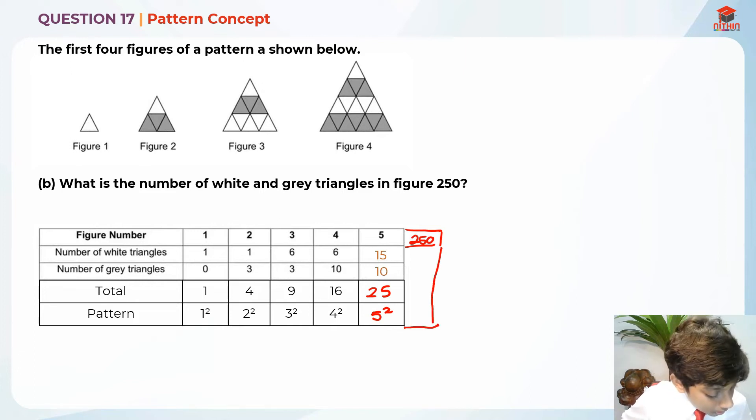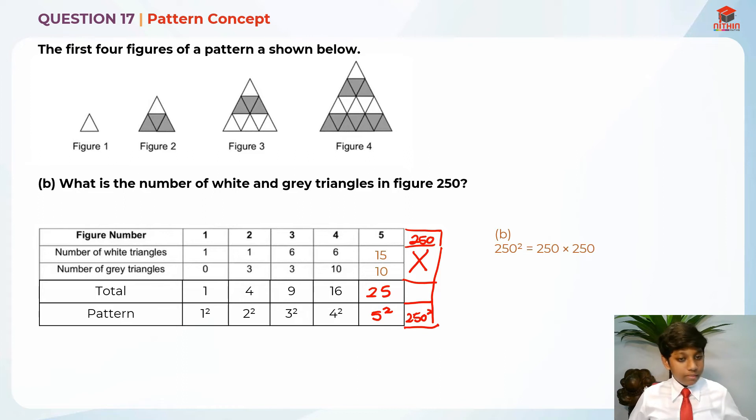It should be 250 squared, right? So it will give us 250 times 250, which will be 62,500. Sorry, I said it wrongly. So the answer is 62,500. So let me write it down. This is how you do it. It's the pattern that we found in part A. We use that in order to find the total number. See? The total. This is the pattern. So I hope you understand part B. Let's move on to part C now.